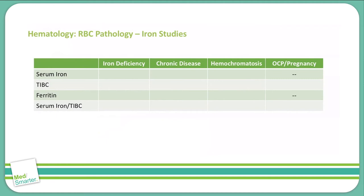First we'll start out with iron deficiency. The serum iron in iron deficiency is obviously going to be decreased — it's in the name, there's a deficiency of iron. The total iron binding capacity, or the transferrin, which is what transports the iron in the blood, will be up because there's lower iron and there's more capacity to bind the iron.